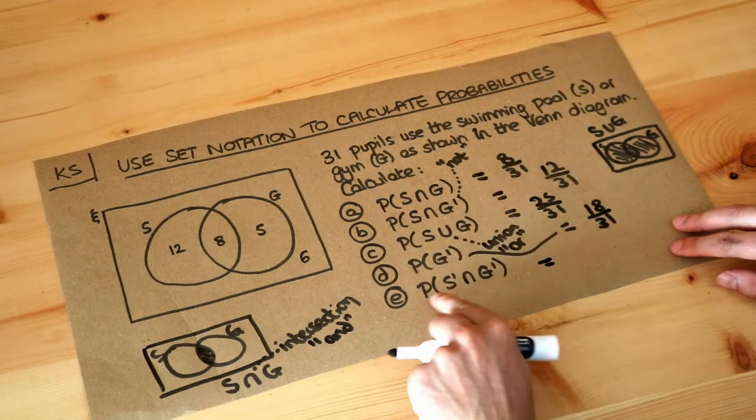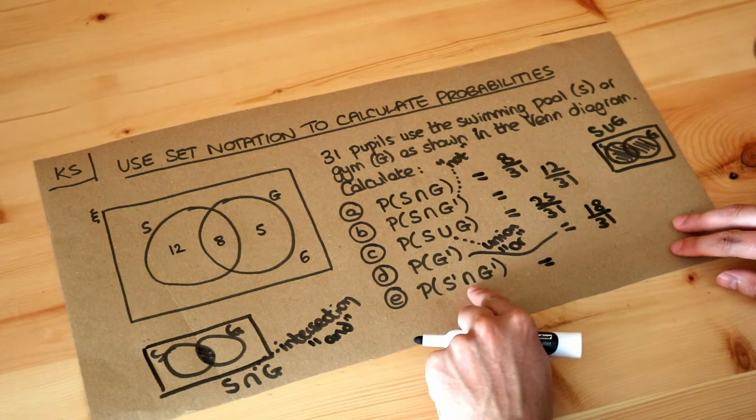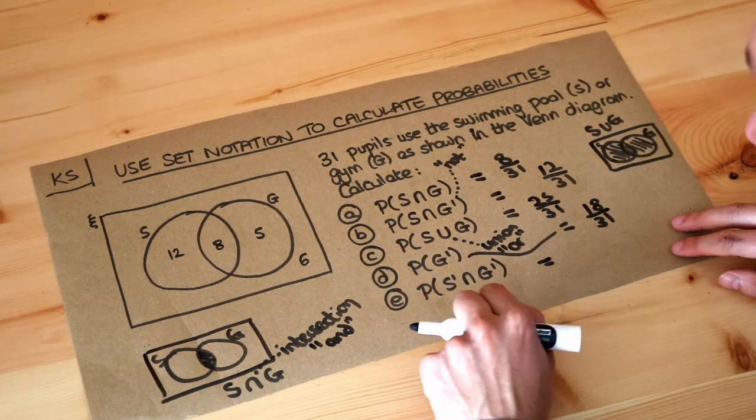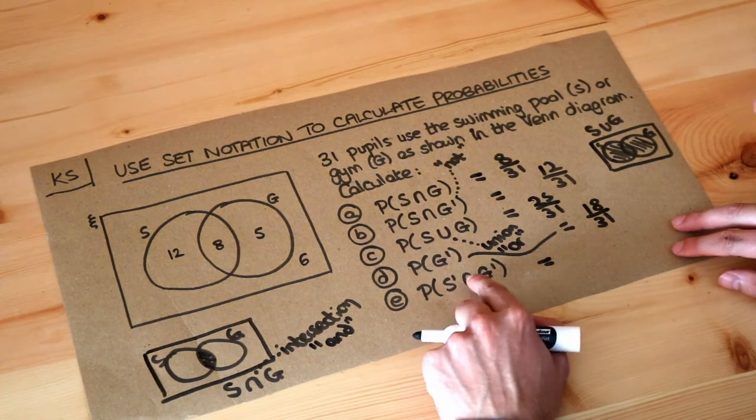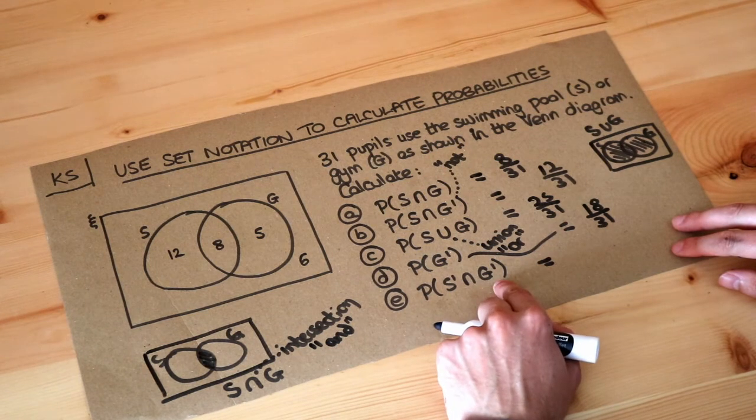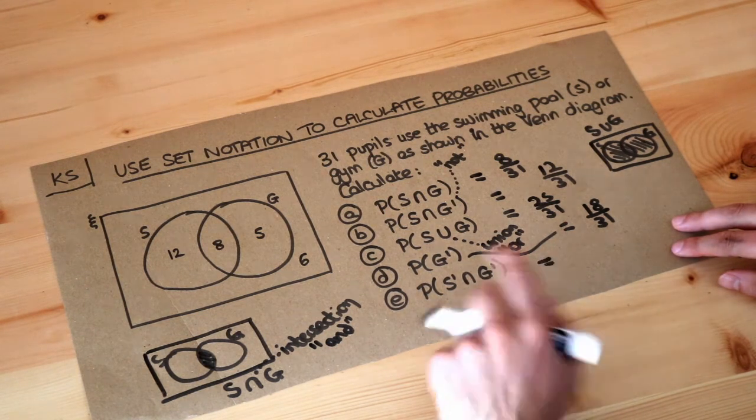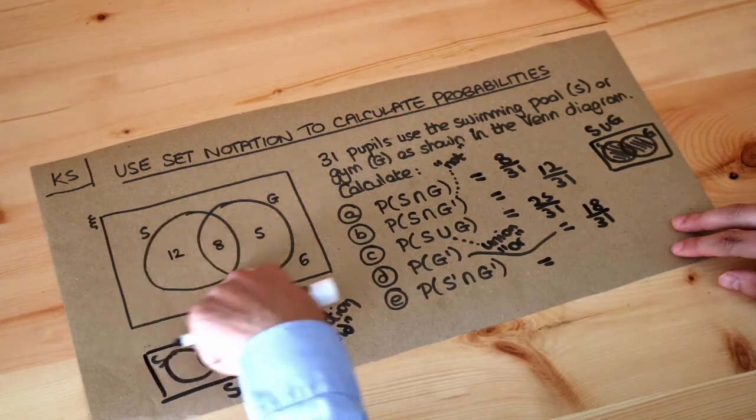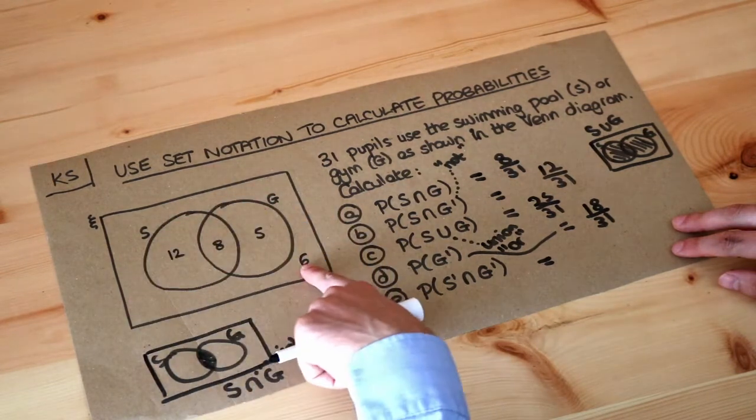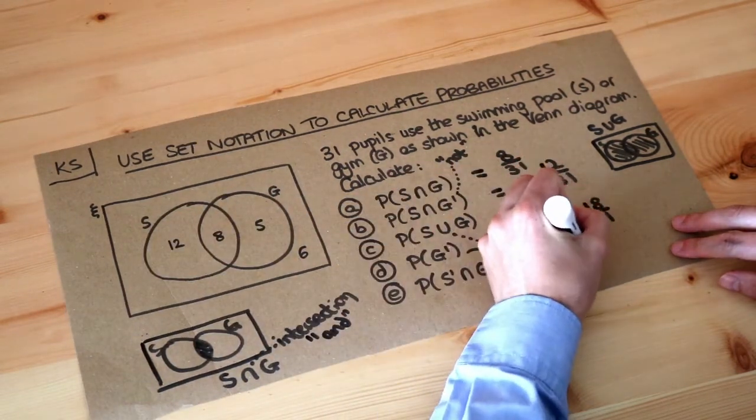And then finally, the probability of S prime intersection G prime. That's the probability that we're not in S and we're not in G. We're not in S and not in G—that's outside both of these circles. We're not in either. So that must be the 6 out of 31, and that's the final answer.